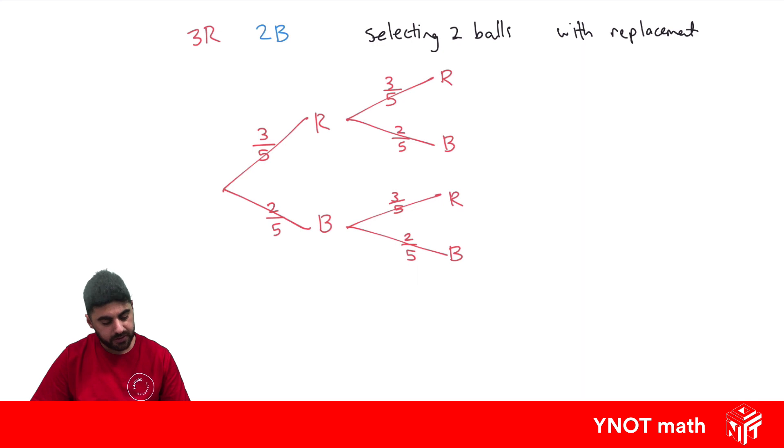So what's the probability of selecting two red balls? Well, that's this scenario here where we go red and red. And if we want that probability, we just multiply across our branches. So we're going to get three out of five multiplied by three out of five, which is just times our numerators and our denominators. So three times three is nine. Five times five is 25. And that would be the probability.